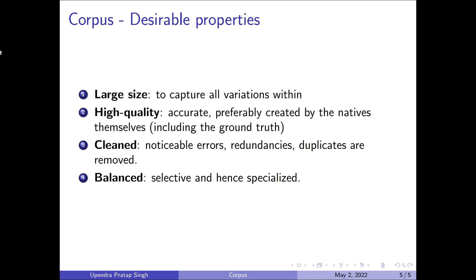Once those errors are removed, we say that the corpus is properly cleaned. In addition to these three properties, the corpus must also be balanced, which means it must satisfy or represent the phenomena that the AI system is supposed to capture. These are the basic desirable properties that any corpus should have for it to be useful for AI-based systems.